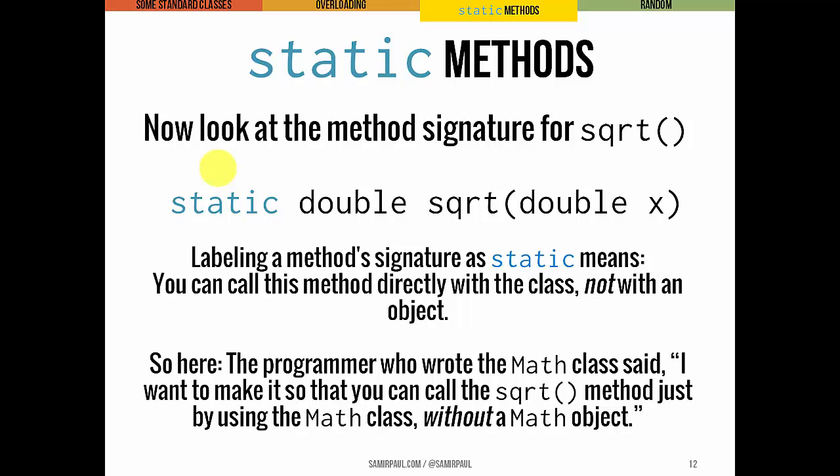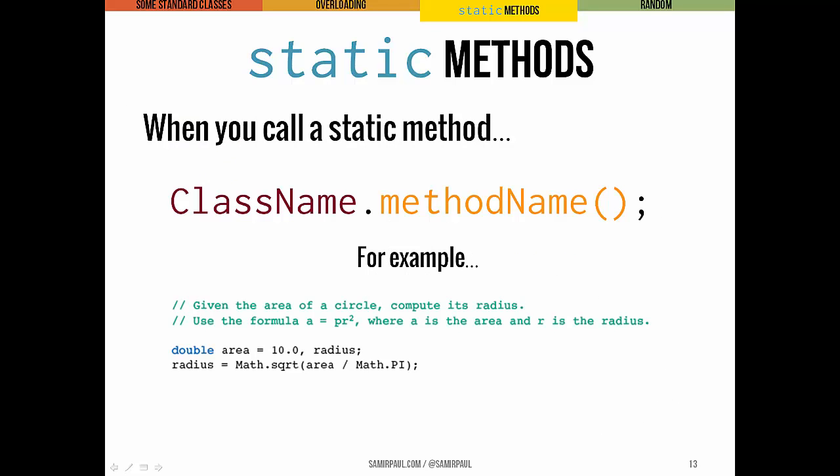I want to make it so that you can use the square root method just by using the Math class. You don't have to create a math object. That's what making a method static means. So if you're calling a static method, the call is going to look something like this.